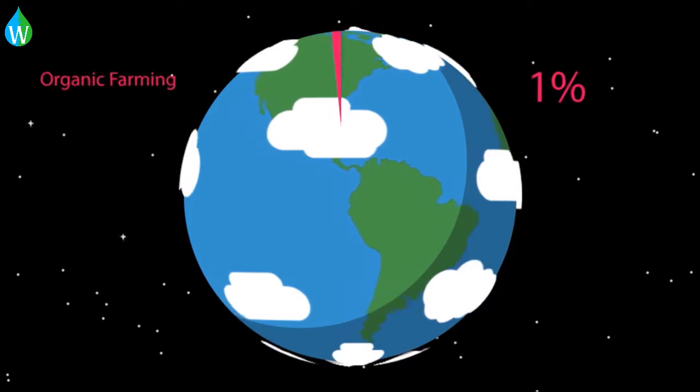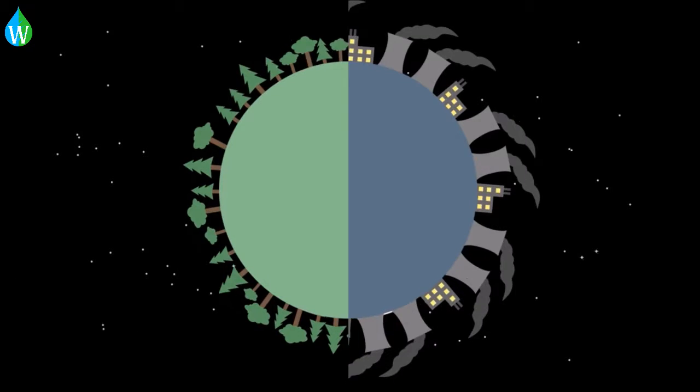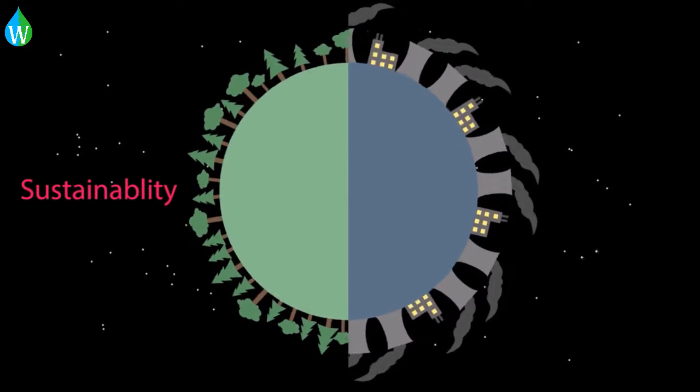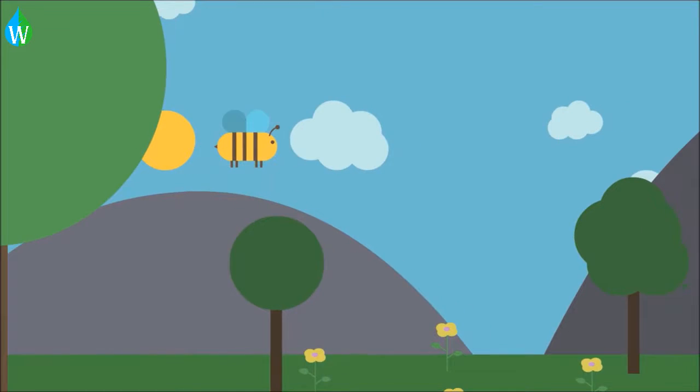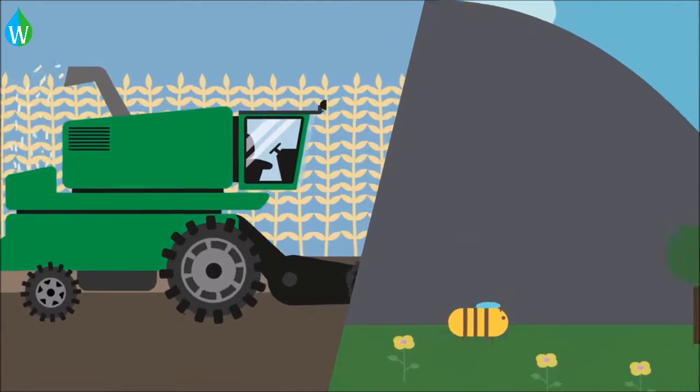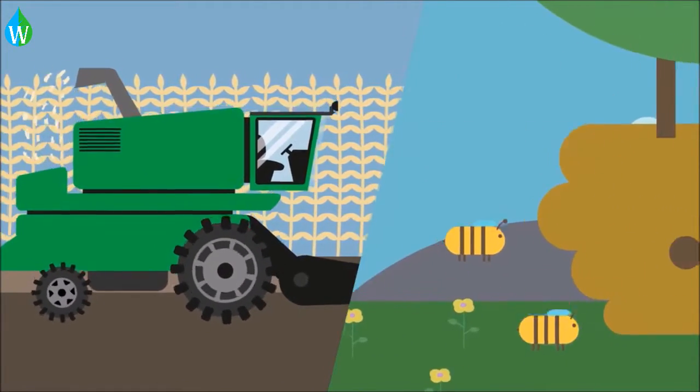Organic farming currently accounts for about 1% of agricultural land worldwide. It focuses on sustainability and is thought to have less detrimental effects on the environment than conventional farming. This has led to it being proposed as an alternative to conventional agriculture for helping to overcome the climate change crisis we are currently experiencing. But the debate continues as it is not a perfect solution.